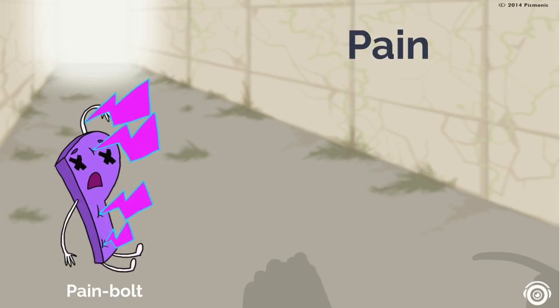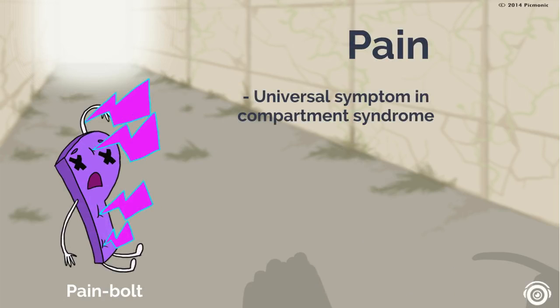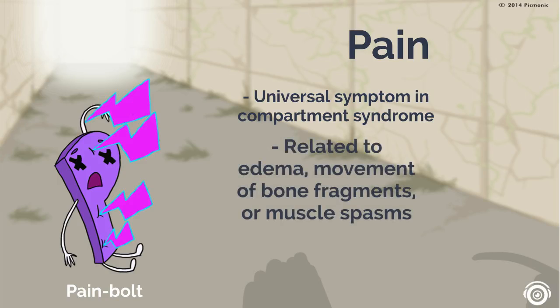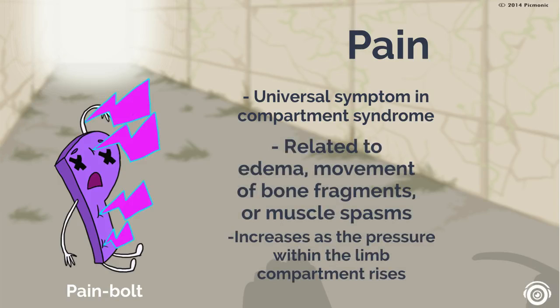Pain is the universal symptom in compartment syndrome. It may be related to edema, movement of bone fragments, or muscle spasms, and it increases as the pressure within the limb compartment rises. Pain is represented by the pain bolt.